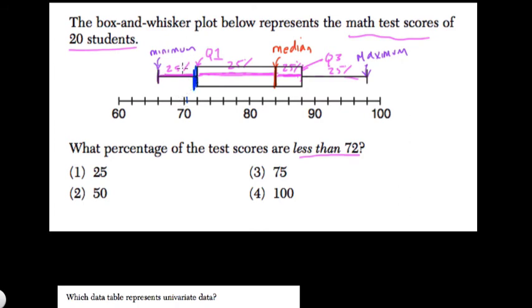So by definition, this number, 72, at the first quartile is above the first 25% of the data, so 25% of the data is below that number. If they asked you below 88 here, you would say 75% of the data is below that number. If it was below the median, you'd say 50% of the data, and so forth.